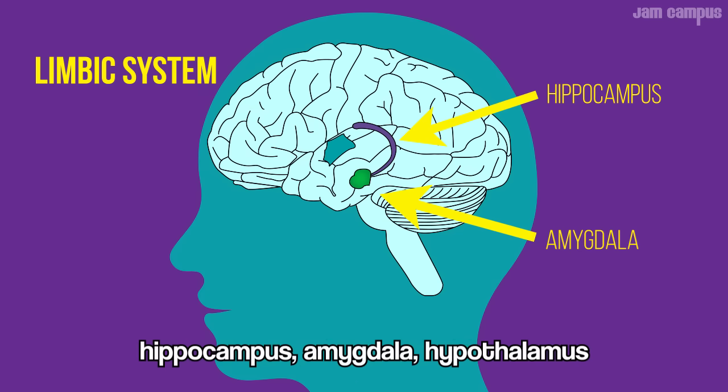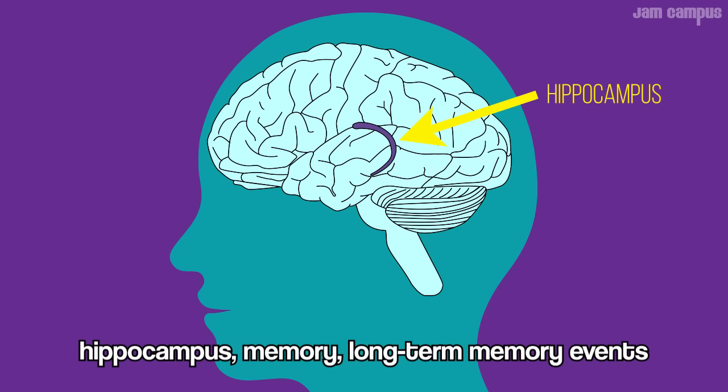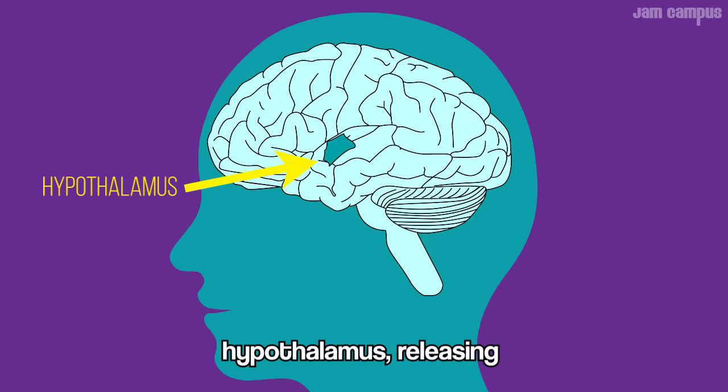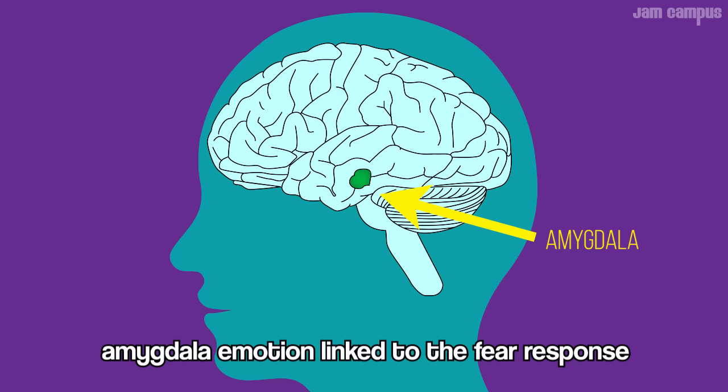The hippocampus, amygdala, and hypothalamus. The hippocampus handles memory, long-term memory. The hypothalamus releases hormones into the endocrine system. The amygdala is linked to emotion and the fear response.